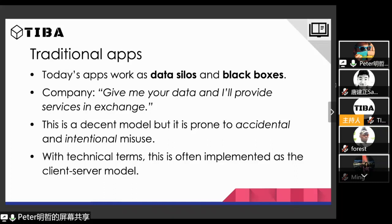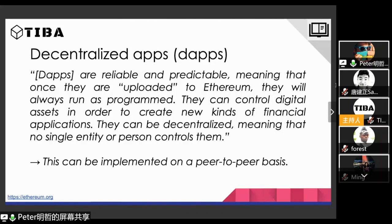The basic business model is that you give your data to the company and they provide services in exchange. It's not a bad model — we get awesome services for free — but they're not really free because you pay with your personal information. It's prone to misuse: accidental misuse would be a data leak where hackers steal your data, and intentional misuse would be Facebook selling your data to advertisers even though you don't want that. As an alternative, we can build decentralized applications that run on top of the blockchain. The key word here is transparency — these applications are transparent, the rules are clear, and everyone knows how they operate.